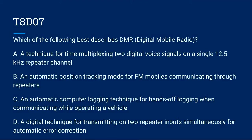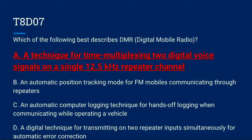T8D07: Which of the following best describes DMR, also known as digital mobile radio? A. A technique for time multiplexing two digital voice signals on a single 12.5 kHz repeater channel. B. An automatic position tracking mode for FM mobiles communicating through repeaters. C. An automatic computer logging technique for hands-off logging when operating a vehicle. Or D. A digital technique for transmitting on two repeater inputs simultaneously for automatic error correction. The correct answer is A: a technique for time multiplexing two digital voice signals on a single 12.5 kHz repeater channel.